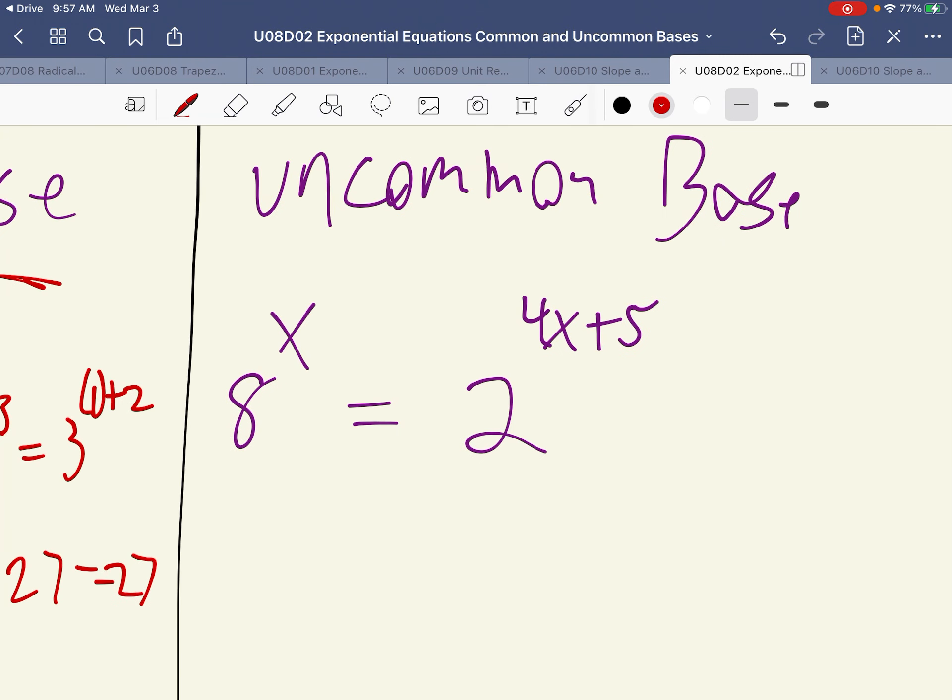If we look at the second example here, these have an uncommon base. The base of the first example is 8, and the second example is 2. What we need to do is we need to make a common base, and the way we're going to do that is using the prime factorization.